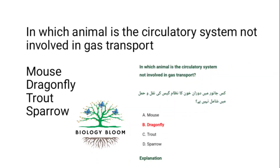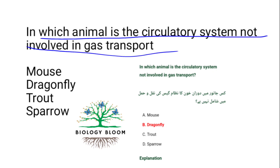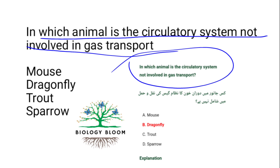In which animal is the circulatory system not involved in gas transport? — Taken from Topper. The answer is dragonfly, which is an insect. Their circulatory system is not involved in gas transport.